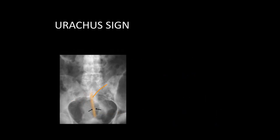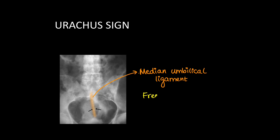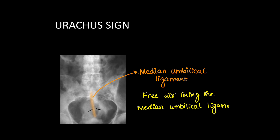Similar to this, we can also see the median umbilical ligament, also known as the urachus. When free air lines the median umbilical ligament, it is accentuated on erect x-ray abdomen. This is known as the urachus sign.